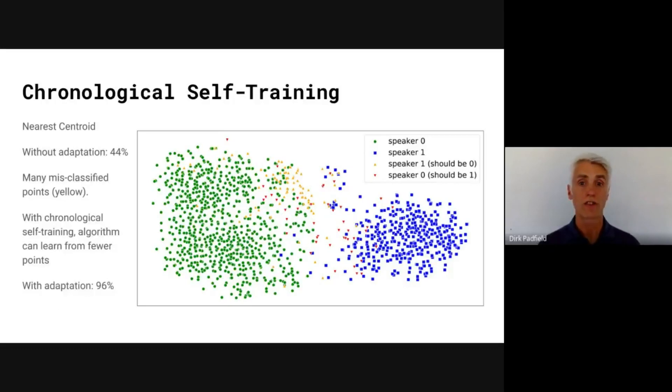If we instead use a chronological self-training algorithm, we get much higher performance at 96%. This is because the algorithm is able to take those initial points, add new ones, and continue to train itself and move forward as time progresses.